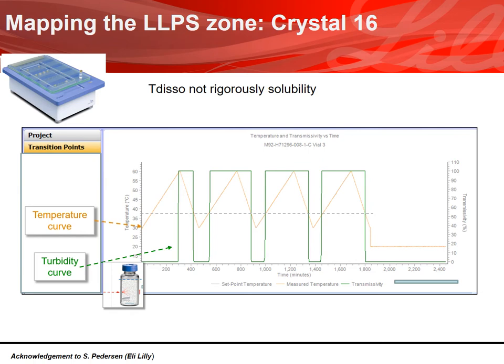We mapped the LLPS phase diagram using Crystal-16. The principle is to monitor with a turbidity probe the evolution of a slurry in a vial undergoing a series of heating and cooling ramps. During the first heating, we determine the temperature of solution — the turbidity signal is high because light passes through the clear solution — and associate this temperature to the known concentration in solution.